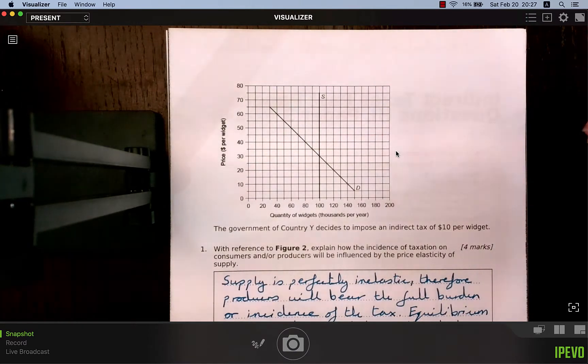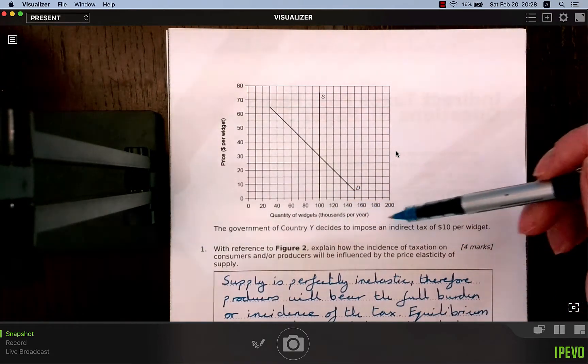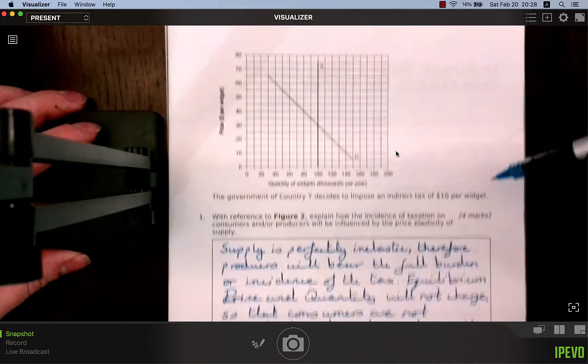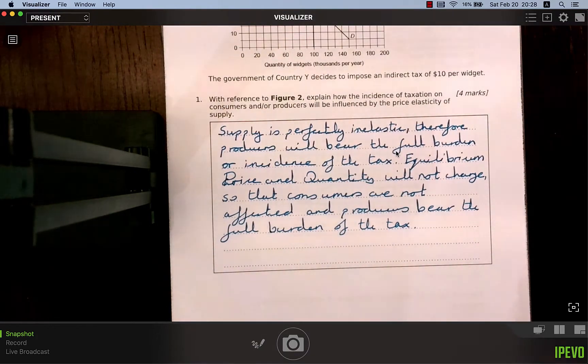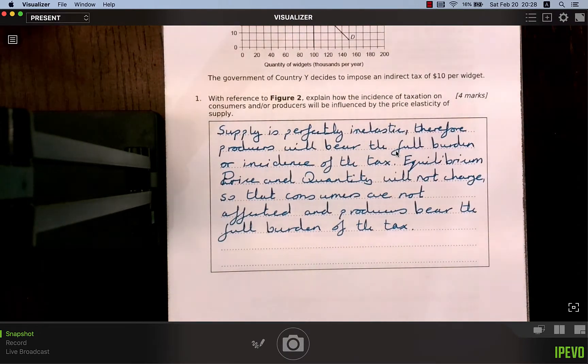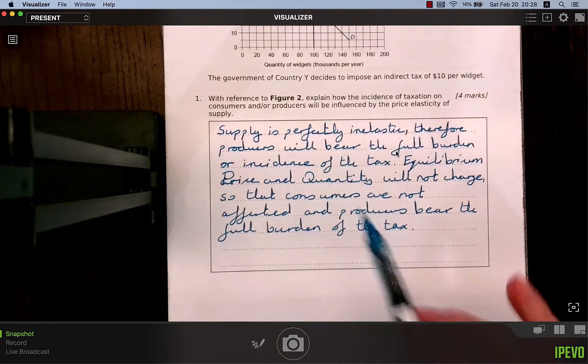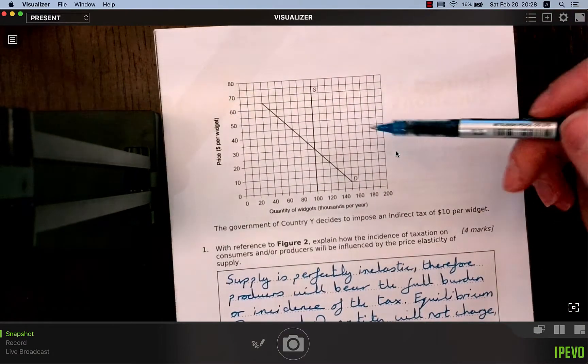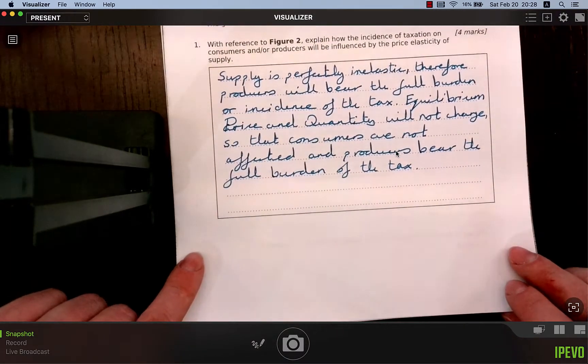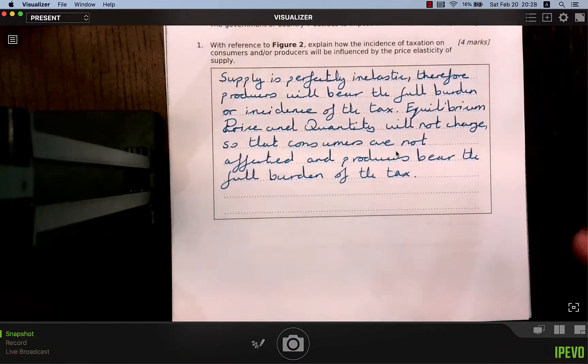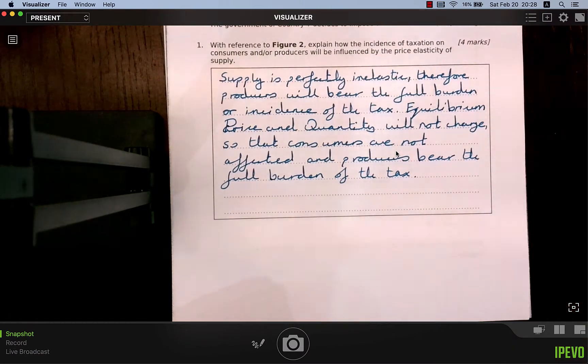What we've got here, and forgive me as I'm moving the document camera, is this idea of the demand and the supply here, perfectly inelastic supply of a fake commodity called widgets. You tend to actually find that in a lot of examples in economics. So the government of Country Y decides to impose an indirect tax of $10 per widget.